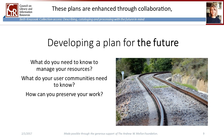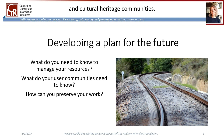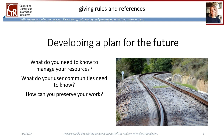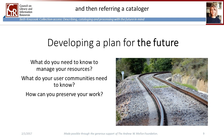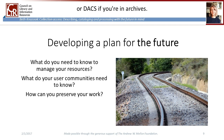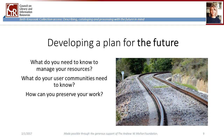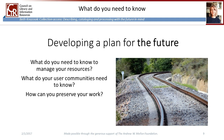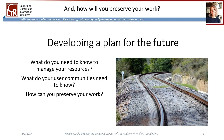These plans are enhanced by collaboration, both within your organization and with colleagues in the broader information and cultural heritage communities. A good cataloging plan describes how to catalog, giving rules and references for your catalogers to follow. It might be fairly brief, just giving a few unique rules and then referring the cataloger to a published manual, like AACR2 for those in libraries or DACs if you're in archives. Your cataloging plan should be developed in response to general questions: What do you need to know to manage and share your resources? What do your user communities need to know? And how will you preserve your work?